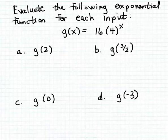In this example, we're given an exponential function named g, and we want to evaluate the function g for various inputs. Since g is an exponential function, its domain is all real numbers, so we can evaluate g for any real number input. The formula for the function g is 16 times 4 to the x power. The initial value in this exponential function is the coefficient 16, and the base of this exponential function is 4.